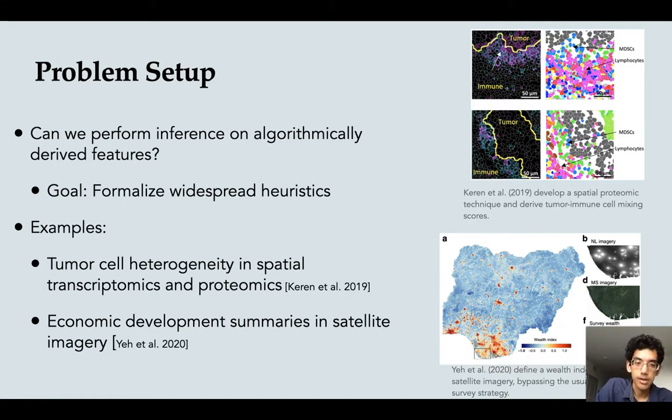And then the second example from year 2020, this was an economic analysis where as a first step they were able to take satellite imagery and figure out something like a wealth index just by looking at the imagery. And this wealth index is something that they would plug into downstream economic analysis where usually it would have required some pretty complex survey work on the ground, but now they just get it from the imagery directly.